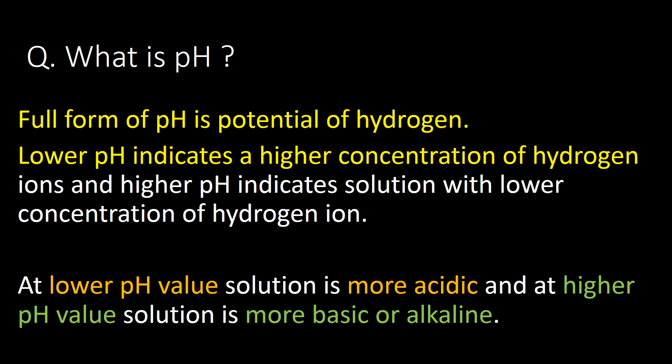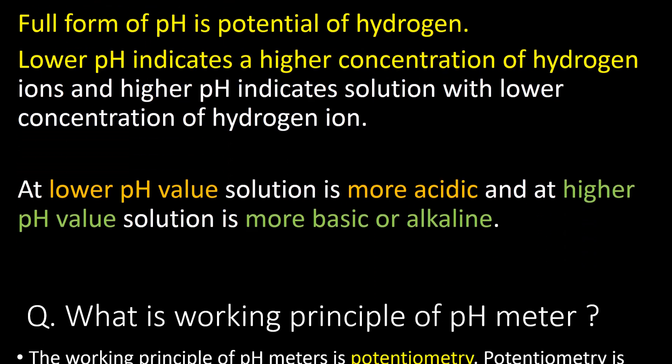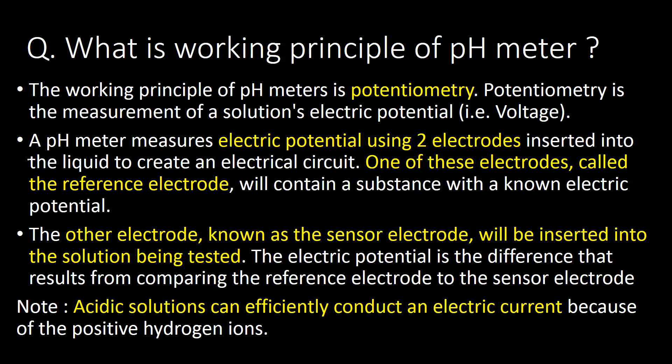Lower pH indicates a higher concentration of hydrogen ions, and higher pH indicates a solution with lower concentration of hydrogen ions. At lower pH value, a solution is more acidic, and at higher pH value, a solution is more basic or alkaline.